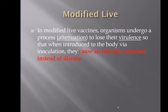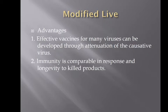Modified live vaccines undergo a process called attenuation. They lose their virulence, so when introduced to the body via inoculation, they cause an immune response, not the disease. You get the same immune response as if you had the disease, but because it's attenuated or modified, the immune response is not getting the disease. It can just be a memorable immune response, meaning the immune system will remember it.